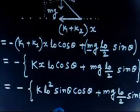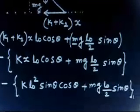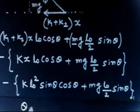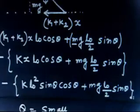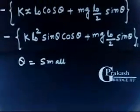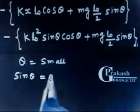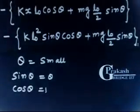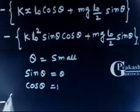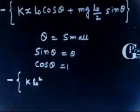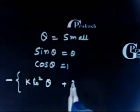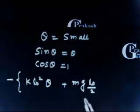Now we do the small angle approximation: for small θ, sin θ ≈ θ and cos θ ≈ 1. Plugging these values into the torque equation gives: −[K·L₀²·θ + Mg·(L₀/2)·θ].